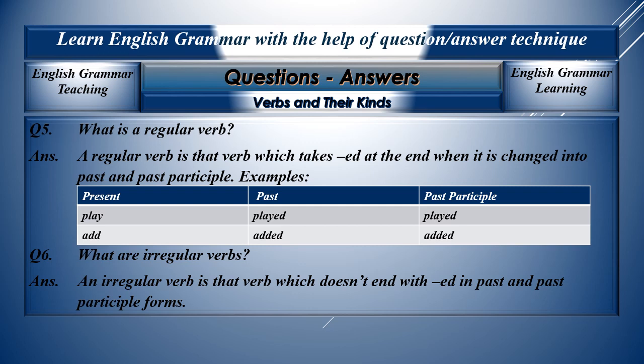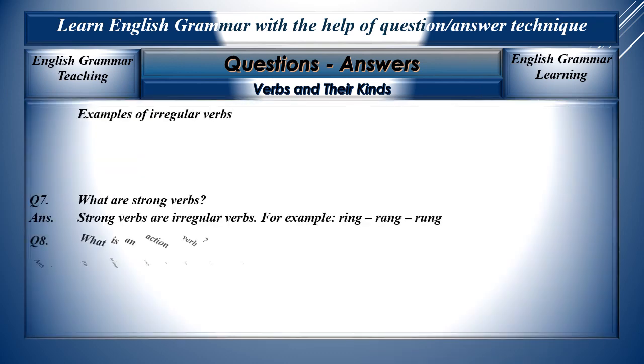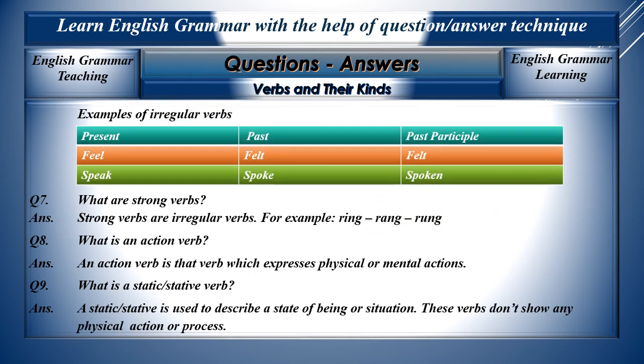Question six: What are irregular verbs? An irregular verb is that verb which doesn't take -ed at the end in past or past participle form. For example: feel, felt, felt; speak, spoke, spoken; take, took, taken; build, built, built. In irregular verbs, every word is different from the others.